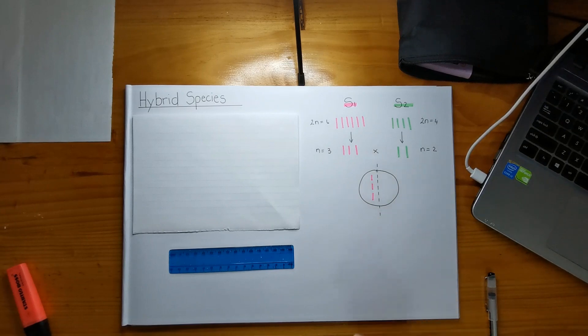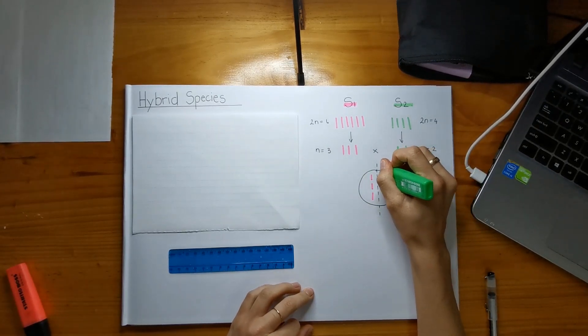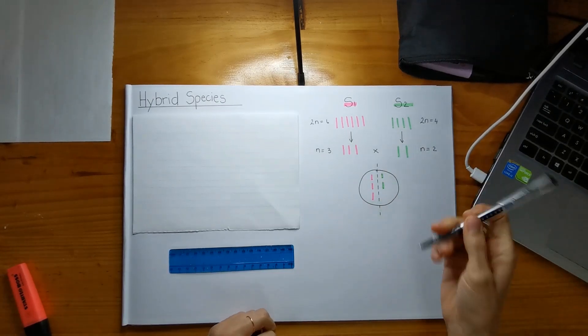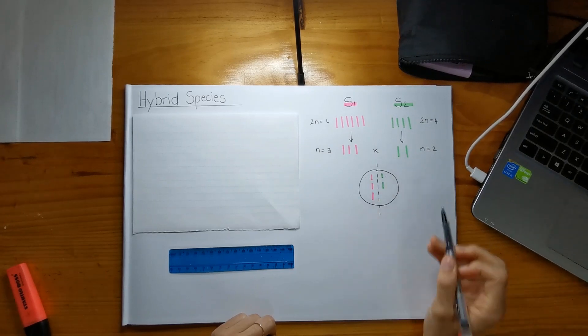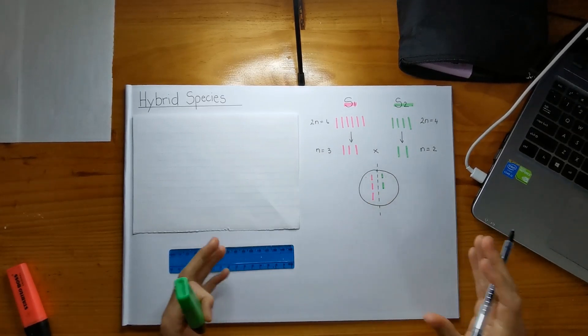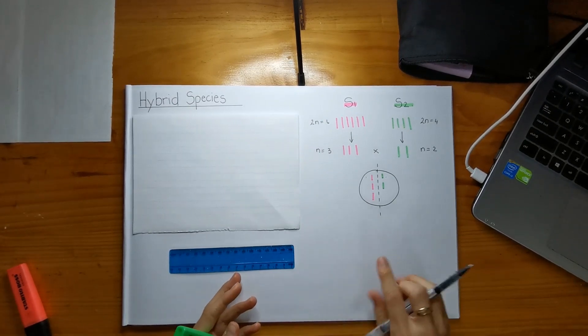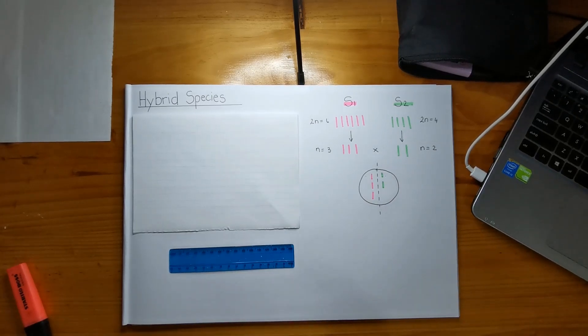So that's the chromosomes from species 1, lined up all nicely, and this is the chromosomes from species 2, also lined up. So for example, these two chromosomes are very similar, so that's why they lined up and formed a homologous pair, which is also called a bivalent, right?